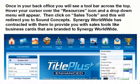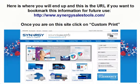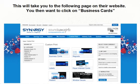Once in your back office, you will see a toolbar across the top. Hover your cursor over the Resources icon, and a drop-down menu will appear. Then click on Sales Tools, and this will redirect you to Sound Concepts. Synergy Worldwide is contracted with them to provide you with sales tools like business cards that are branded to Synergy Worldwide. Here is where you will end up, and this is the URL if you want to bookmark this information for future use. Once you're on this site, click on Custom Print.